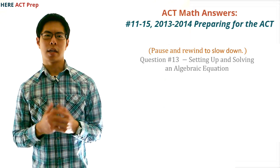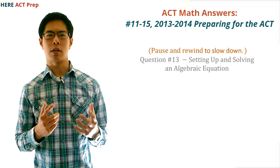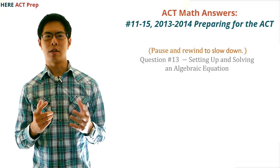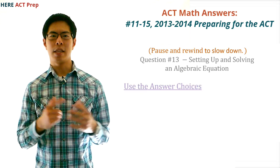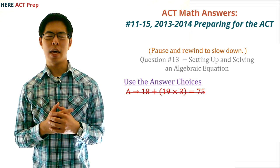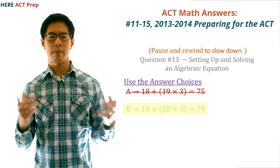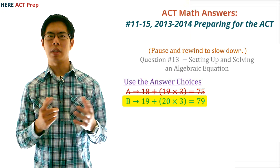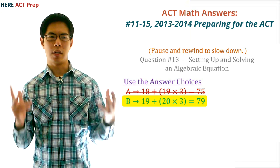Question number 13. The concept this question tests is setting up and solving an algebraic equation, but we're not going to do that since there's an easier way to do this question. Just start plugging in the answer choices. For choice A, we get 18 plus 19 times 3 equals 75 — nope. For choice B, we get 19 plus 20 times 3 equals 79 — bingo. And we're done.